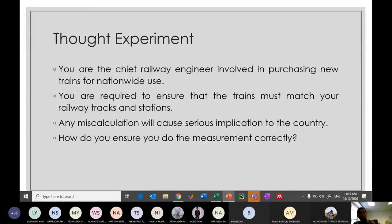Right now let's start with a thought experiment. Assume you are a chief railway engineer and you are involved in purchasing new trains for nationwide use. You are required to ensure that the trains must match your railway tracks and stations, the platforms where people embark or disembark. Any miscalculation will cause serious implication to the country. So how do you ensure you do the measurement correctly? This actually happened in France around 2014.